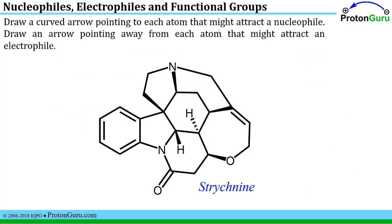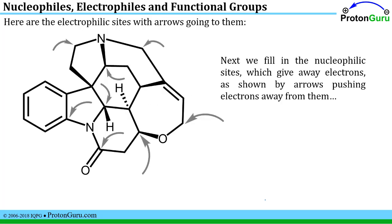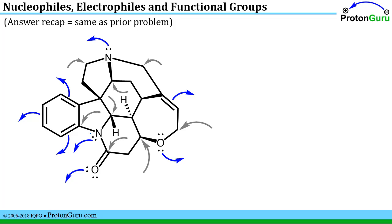Here's the same type of problem but using strychnine as the starting material. You might want to pause the video and see if you can get the solution on your own. Identify the electrophilic sites — they should be the partial positive sites at the ends of polar bonds, so anywhere you'd have a partial plus you should have an arrow pointing to those sites. Next identify the nucleophiles, which will be giving electrons away — anywhere you have an excess of electrons, like four electrons piled in a double bond, or lone pairs not held in bonds, those are good examples of nucleophiles that would give electrons away.